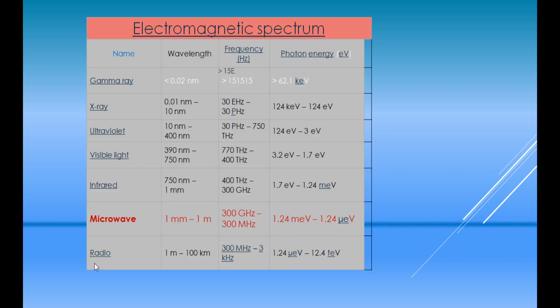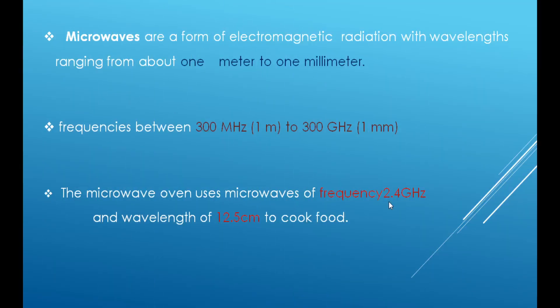The microwaves have a wavelength of 1 meter to 1 millimeter and frequency of 300 MHz to 300 GHz.